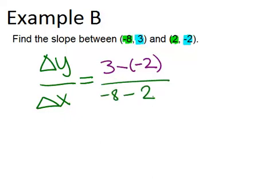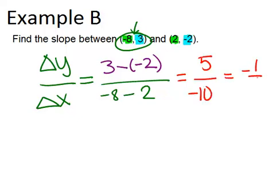Make sure when you do it this way that you start with the same coordinate each time. So I started with subtracting the -8 and the 3 in each case. Now you want to simplify both of these, and you end up with 5 over -10, which reduces to -1/2.